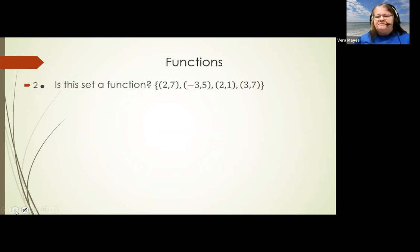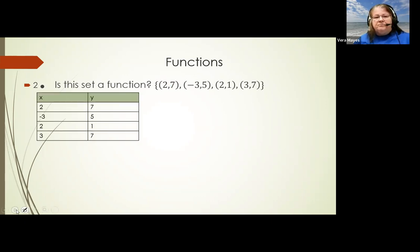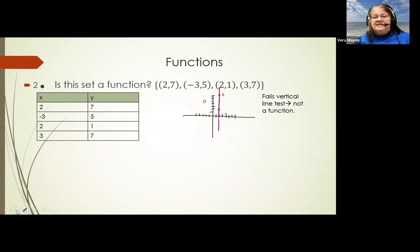The next question dealing with functions asks: is this set a function? You've dealt with this in a lot of different ways — drawing pictures, looking at relationships. We know that if it's a function, each x value should only be paired with one unique y value. One way to look at it is to put it in a chart, like a t-table. You can see here that two is paired with seven, but two is also paired with one. You can also draw the points and check if it violates the vertical line test — and this one does, so it's not a function.